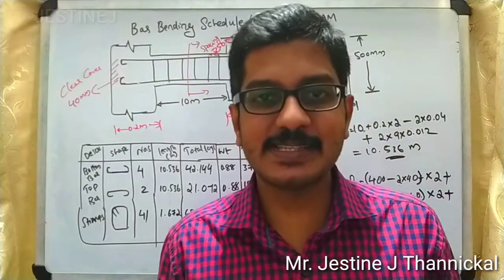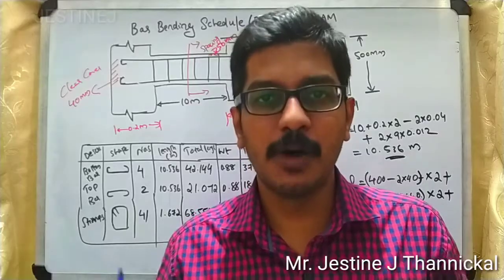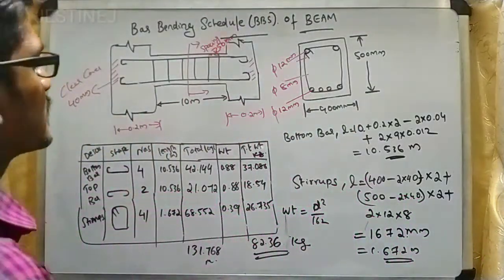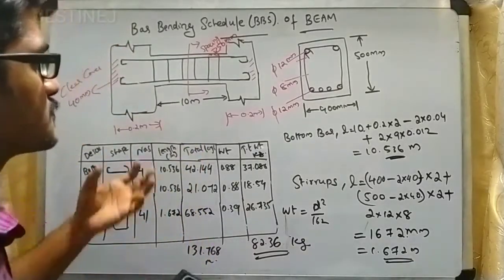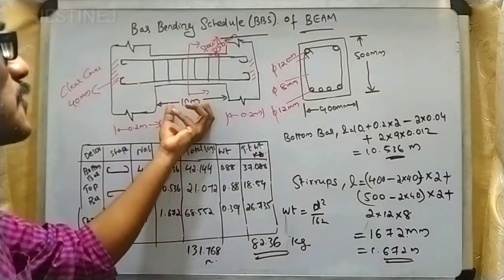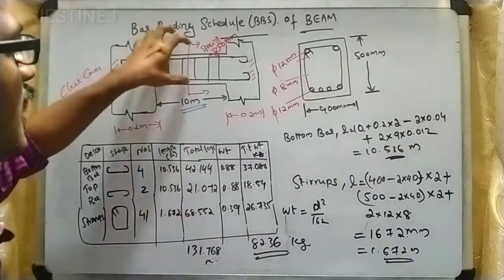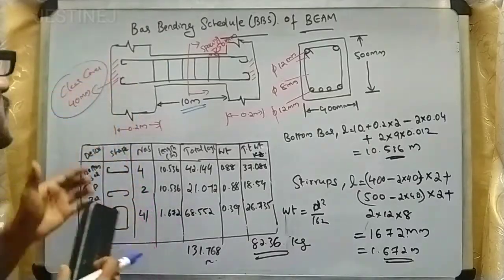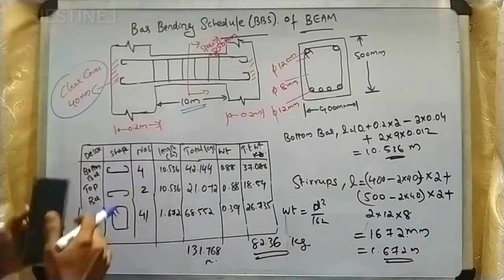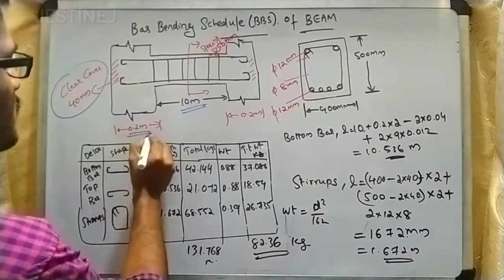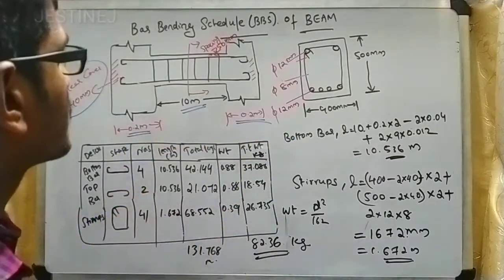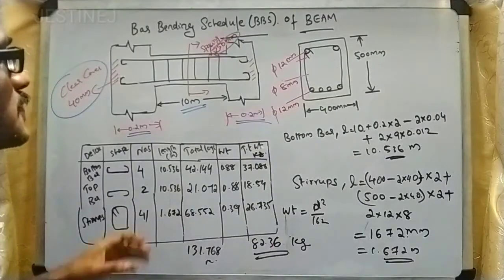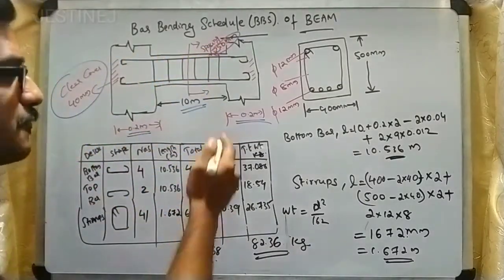Welcome back to a new video lecture. In this lecture we will discuss a problem related to bar bending schedule. With the help of a diagram I will explain. A beam with a span length of 10 meters is given and reinforcement details are also mentioned. A clear cover of 40 mm is given, and it is supported by two columns with dimensions 0.2 meter on each side. Stirrups are arranged with a spacing of 250 mm.